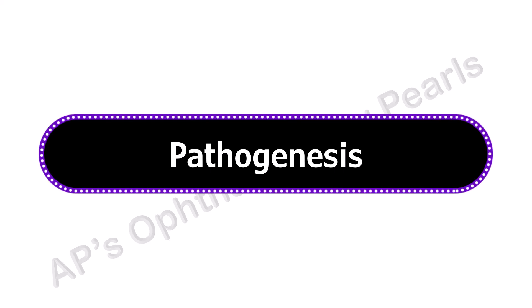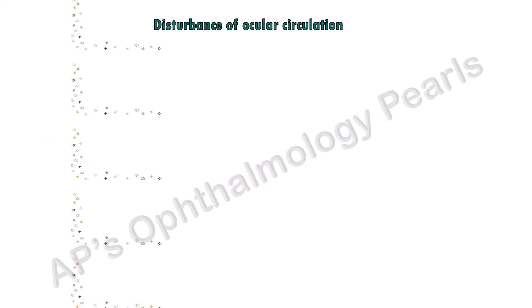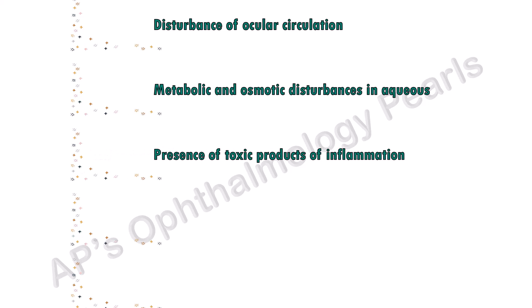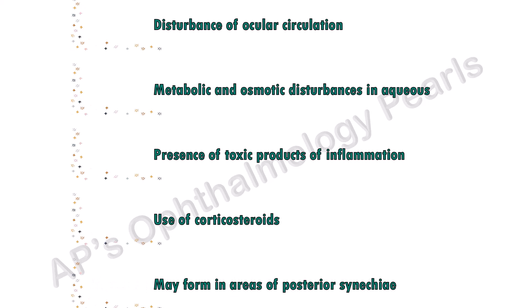Any disturbance in the intraocular fluids on which the lens depends for nutrition can result in cataract formation, such as disturbance of ocular circulation, metabolic and osmotic disturbances in the aqueous, presence of toxic products of inflammation, use of corticosteroids, and lenticular opacification may also form in areas of posterior synechiae.